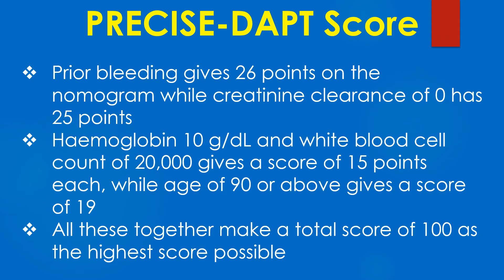Prior bleeding gives 26 points on the nomogram, while creatinine clearance of 0 has 25 points. Hemoglobin of 10 grams per deciliter and white blood cell count of 20,000 gives a score of 15 points each, while age of 90 or above gives a score of 19. All these together make a total score of 100 as the highest possible score.